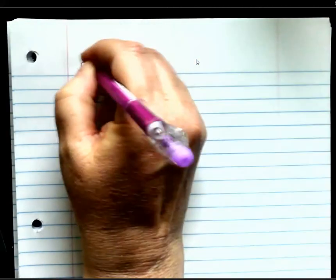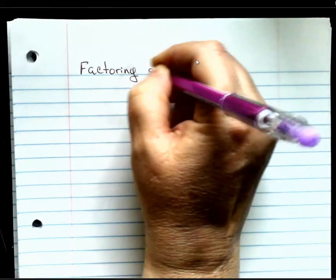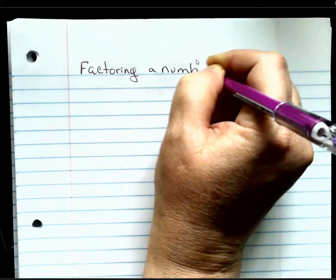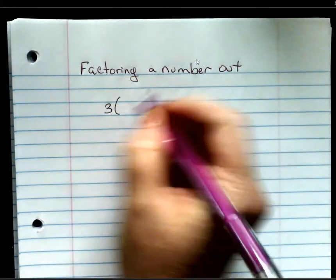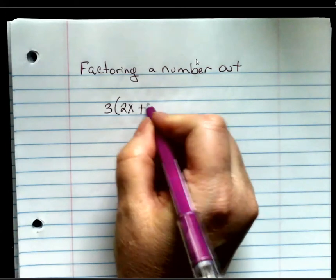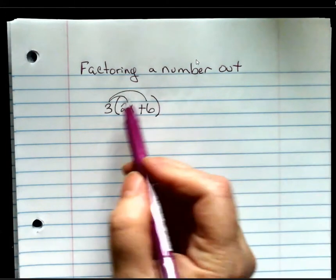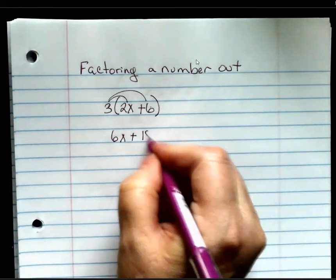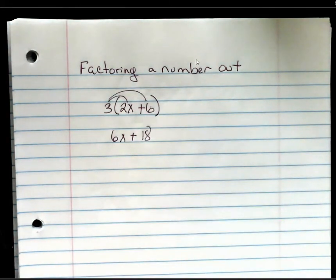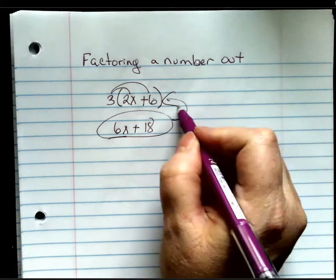Okay, so let's talk about factoring out a number. When we did distributive property, we had a number on the outside, and we multiplied that number times both numbers inside. 3 times 2x is 6x, plus 3 times 6 is 18. So what we're going to do now is we're going to take this and rewrite it like that.